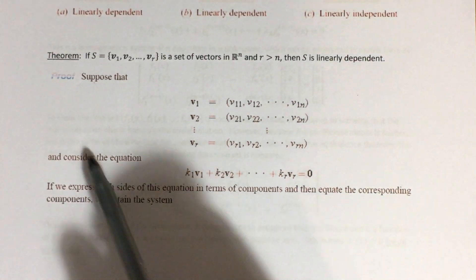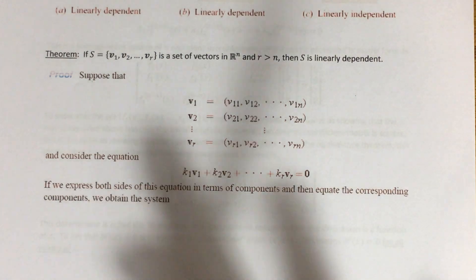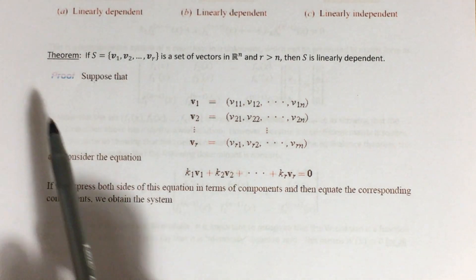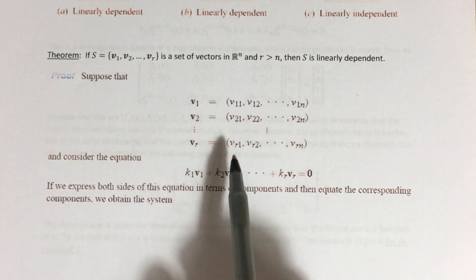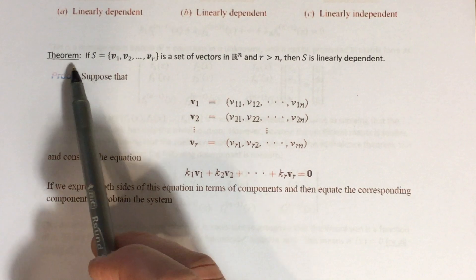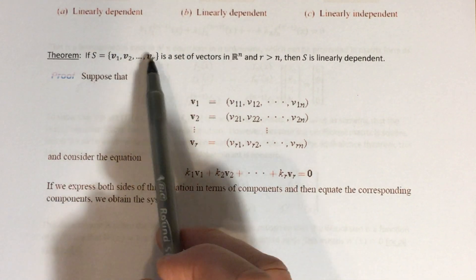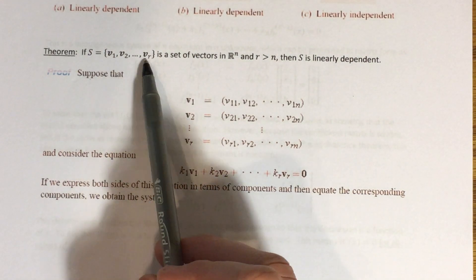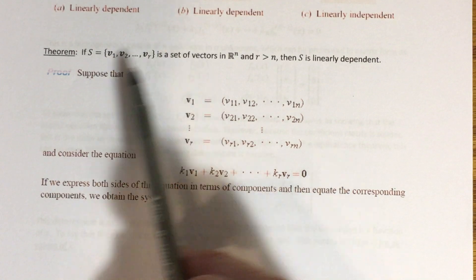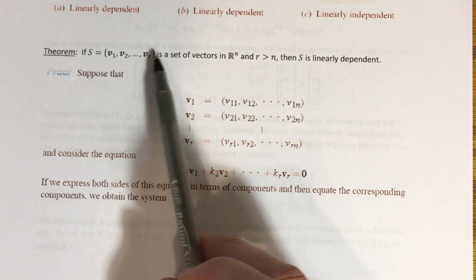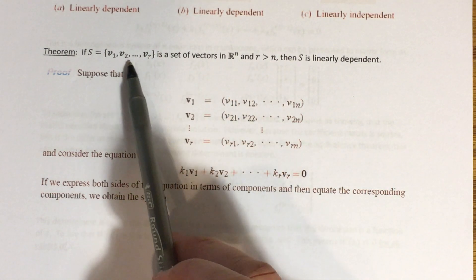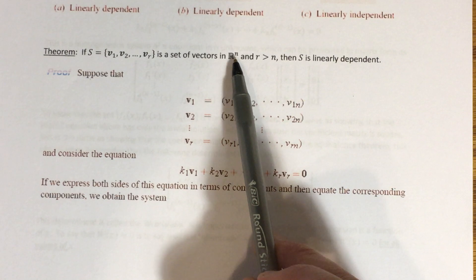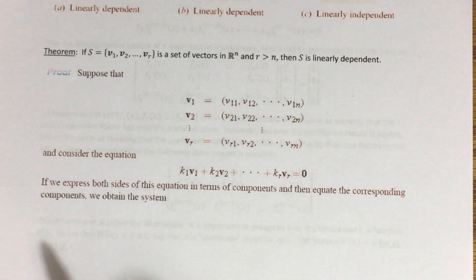Here's another theorem. We're looking at a set S of vectors specifically in RN, with R vectors total — v1 through vR — and suppose that R is greater than N. In other words, the number of vectors in the set is larger than the N that determines the N-space. If that's the case, then S is automatically linearly dependent. So if I had a set of four vectors all in R3, I wouldn't have to do any work — I could automatically say that must be a linearly dependent set because there are more than three vectors and all vectors are from R3.